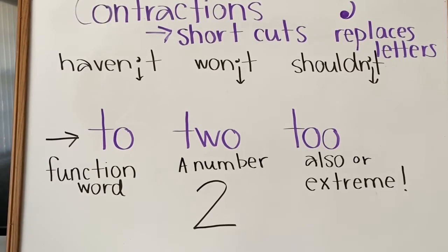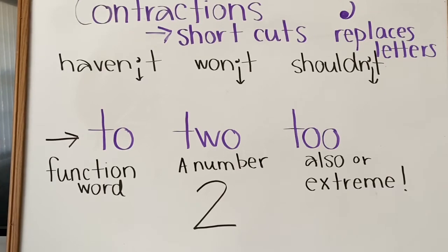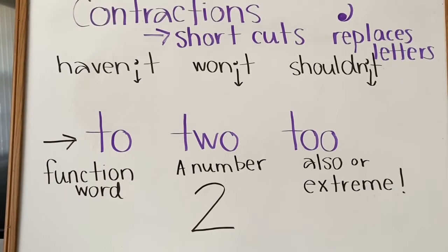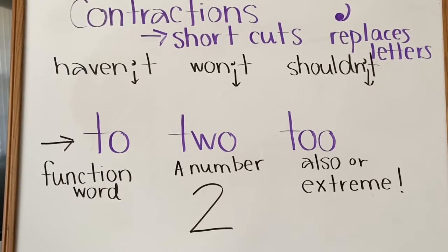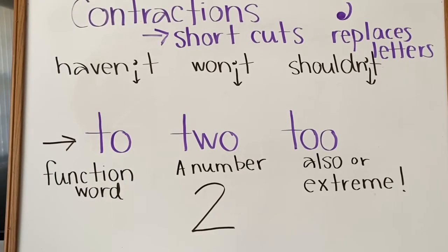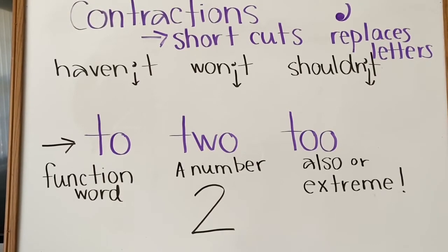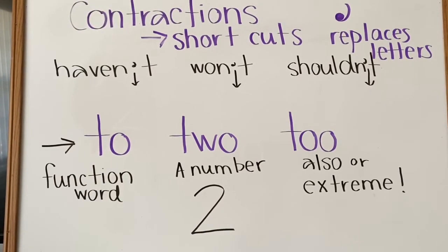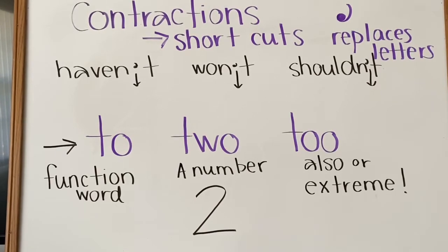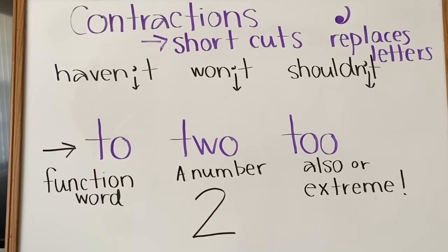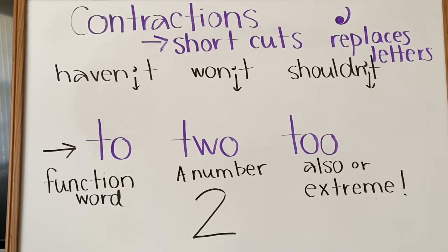What letter does the apostrophe take the place of in haven't? That's right. Oh, let's look at the word won't. The word won't is a tricky one. It's a contraction for will not. What letter does the apostrophe take the place of in the word won't? That's right. It takes the place of the letter O.